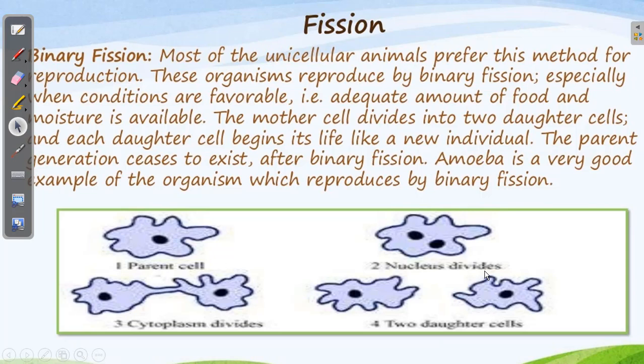The word fission means division. Binary fission is the first type of asexual reproduction. 'Bi' means two and 'fission' means division. It mostly takes place in unicellular organisms — organisms which are made up of only one cell. Such organisms reproduce by this method, binary fission. The next question is: when will the organism reproduce?